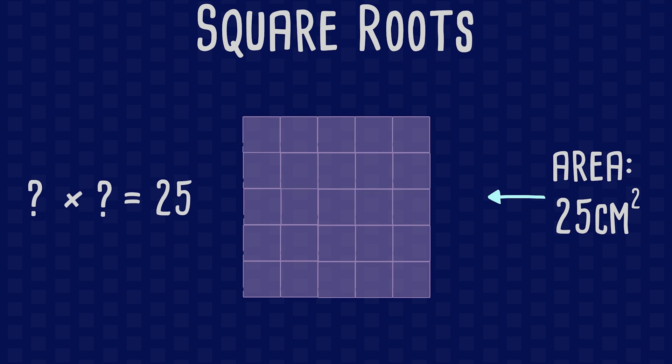A square root is the number which when multiplied by itself makes the square number. So what number have we multiplied by itself to make 25? 5. This is the root of the square, the number which has made 25.